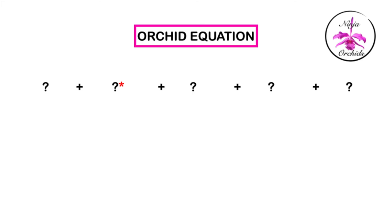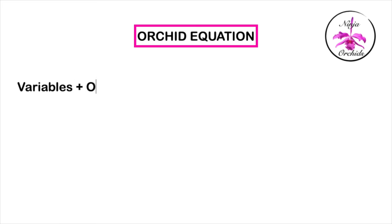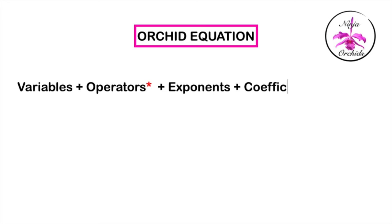An algebraic equation often consists of the following parts: you need the variables, the operators, the exponents, coefficients, and constants — with an equal symbol ending with a result or value.